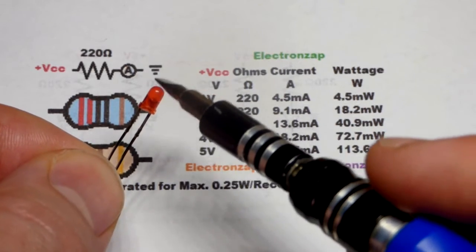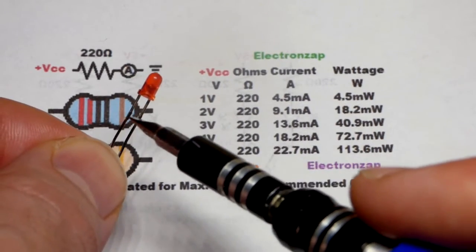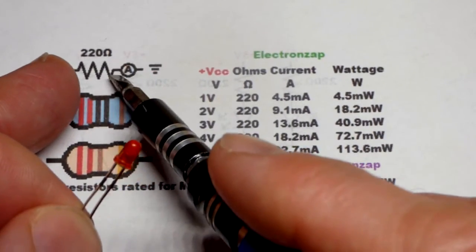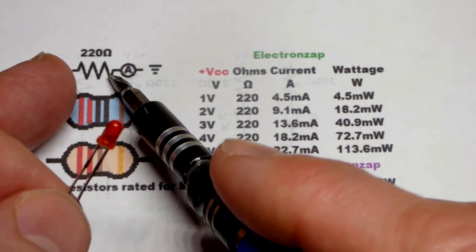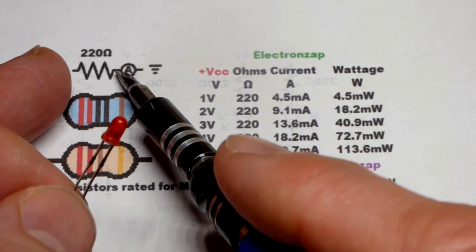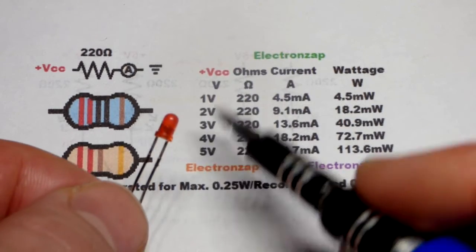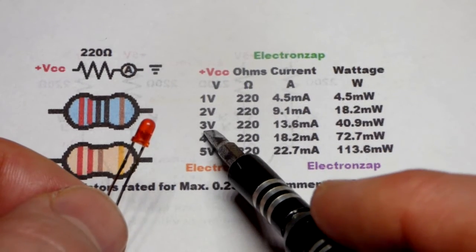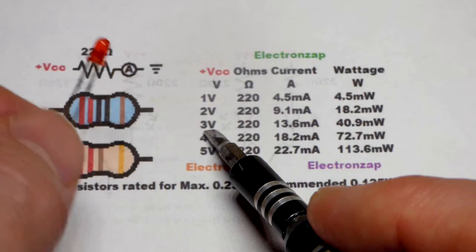These red LEDs are going to drop about 2 volts. So they build up about 2 volts. The rest of the voltage goes across whatever is limiting the current. So if you use a 220 ohm resistor, 5 volt power supply.